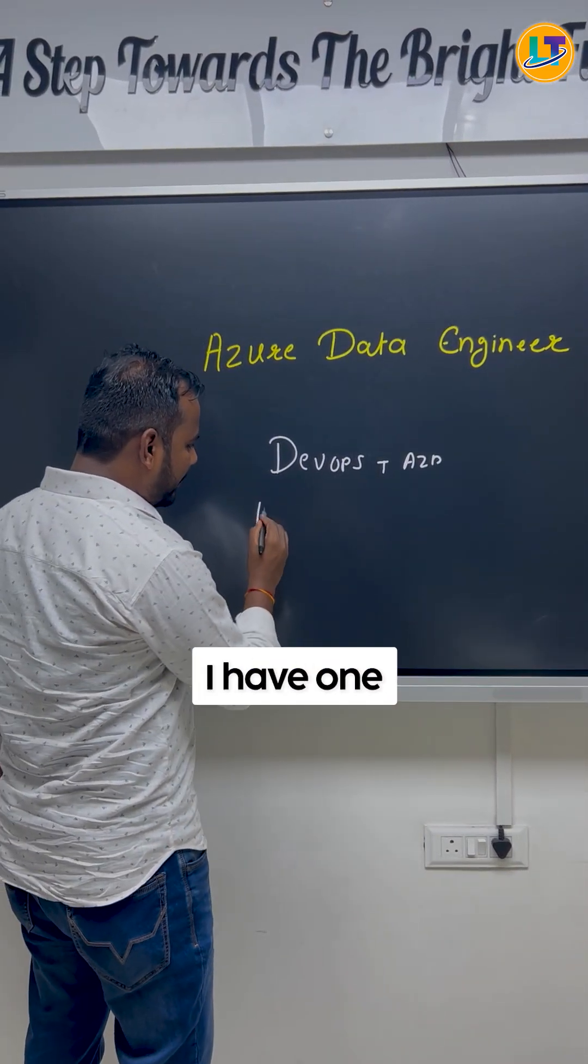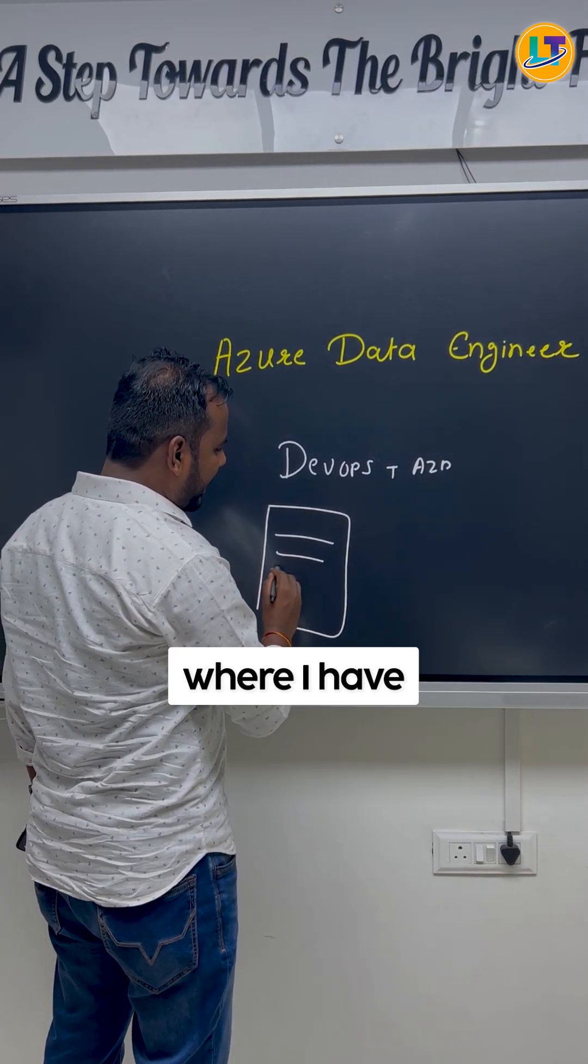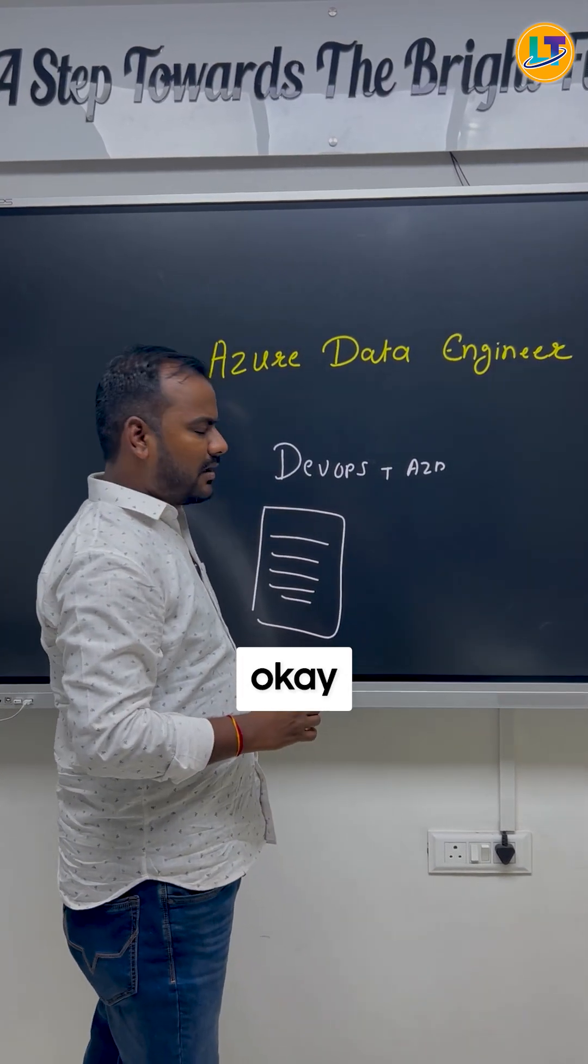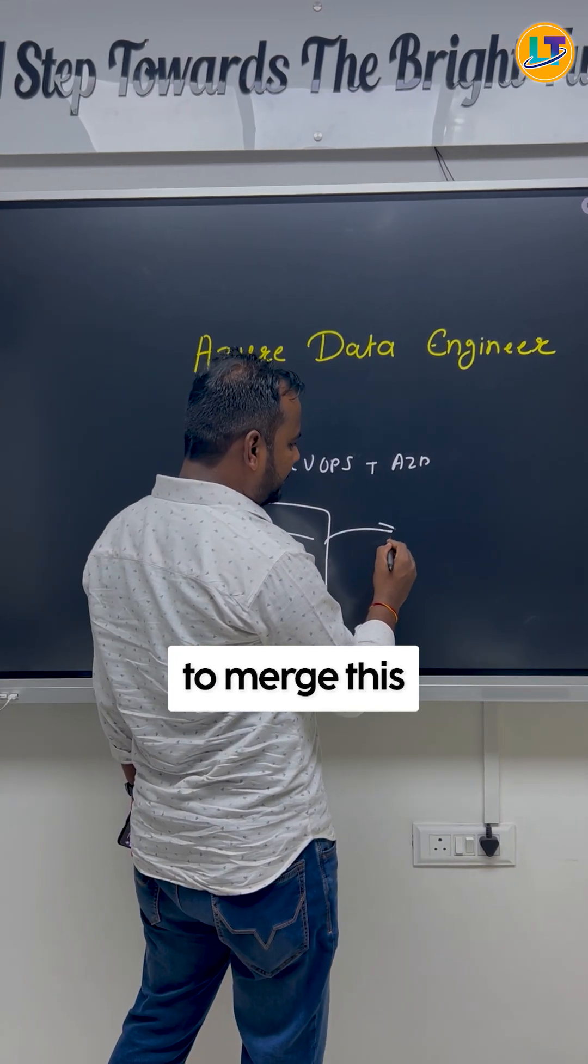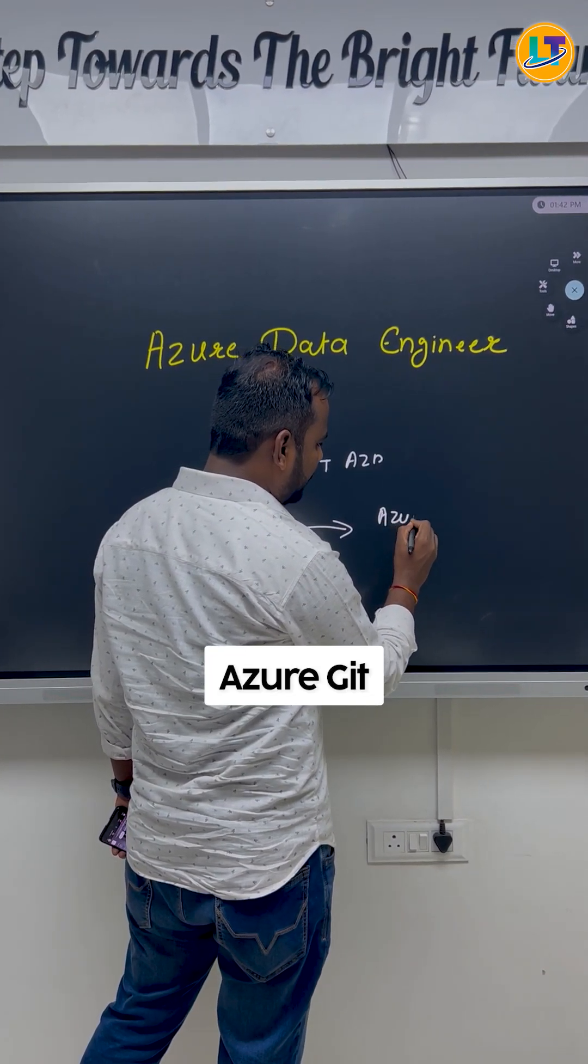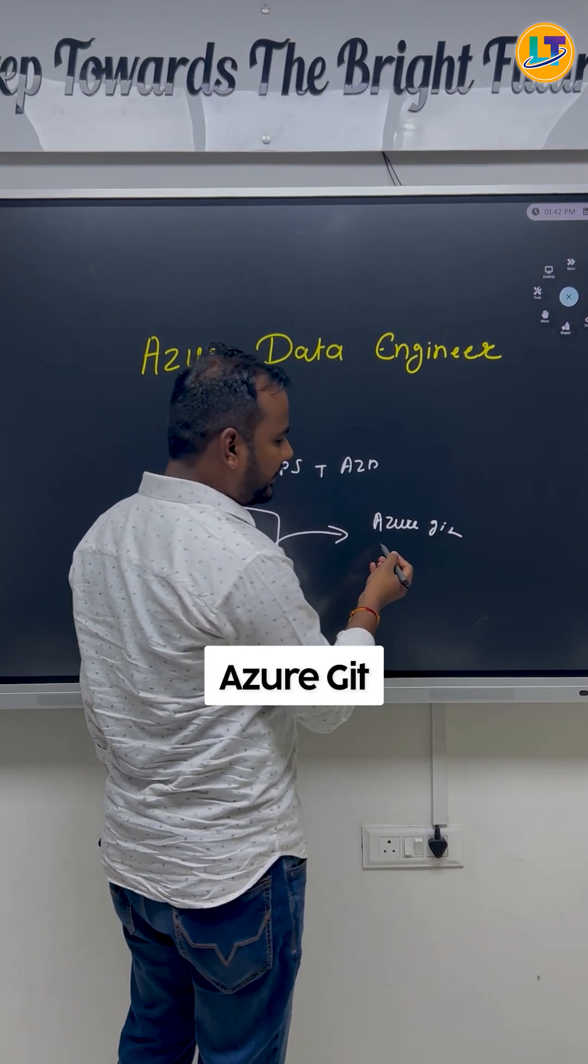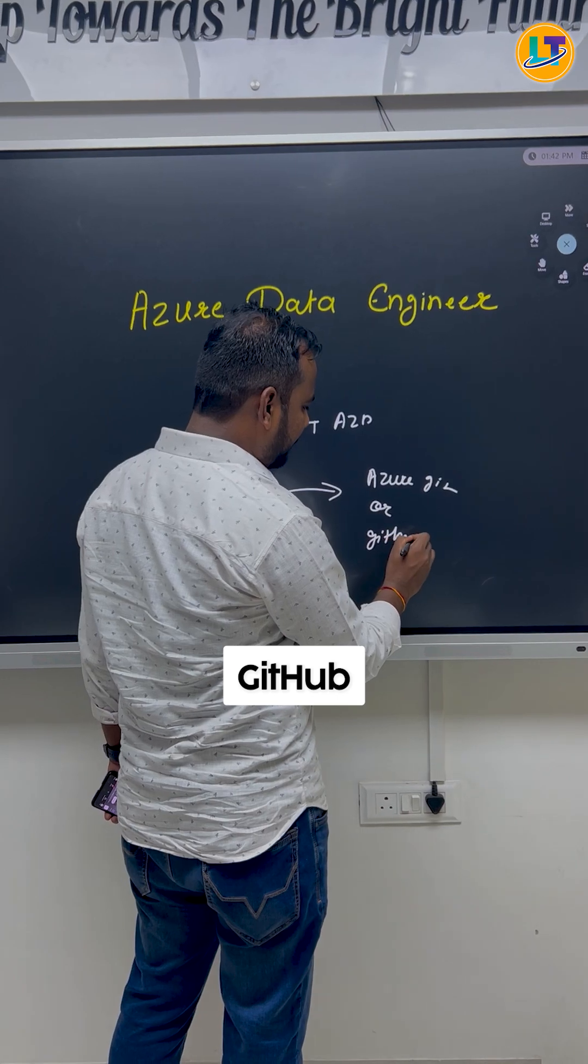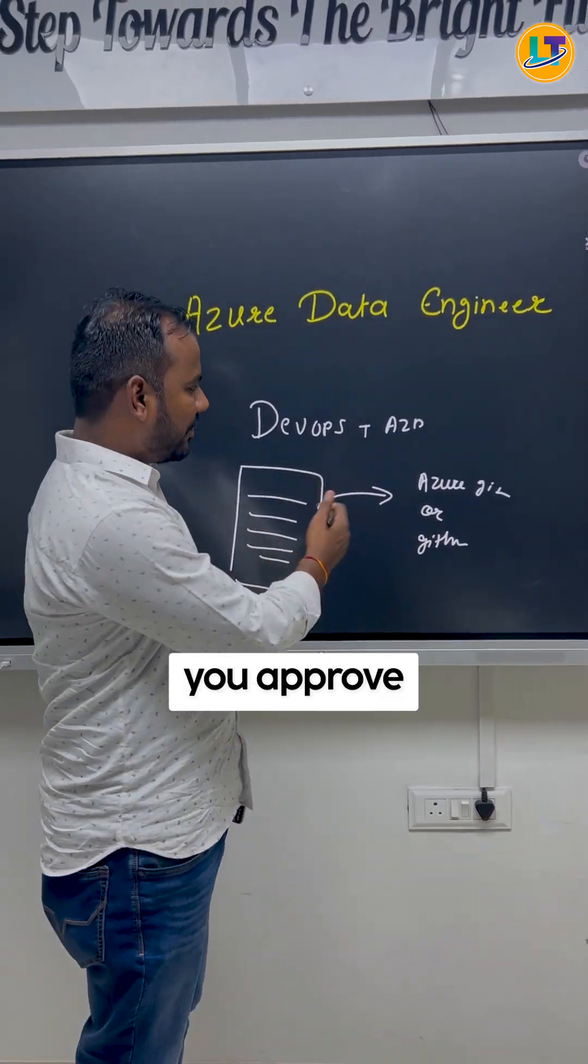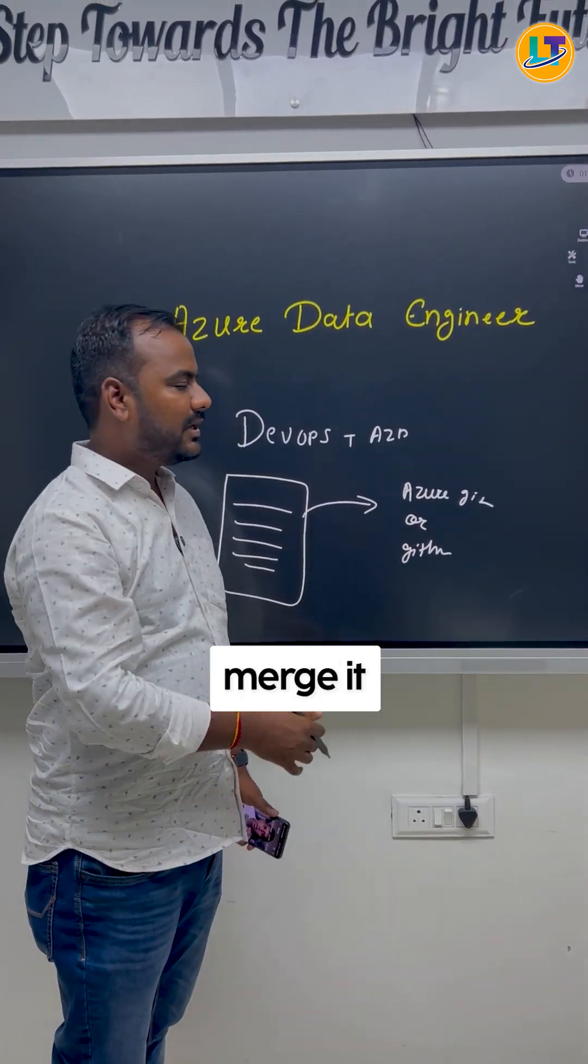Let's take an example. I have one notebook where I have written my code. As soon as you approve this code, you are going to merge this code with Azure Git. You can merge this with Azure Git or you can merge this with GitHub. This means you have written the code, you approve the changes, and then you merge it.